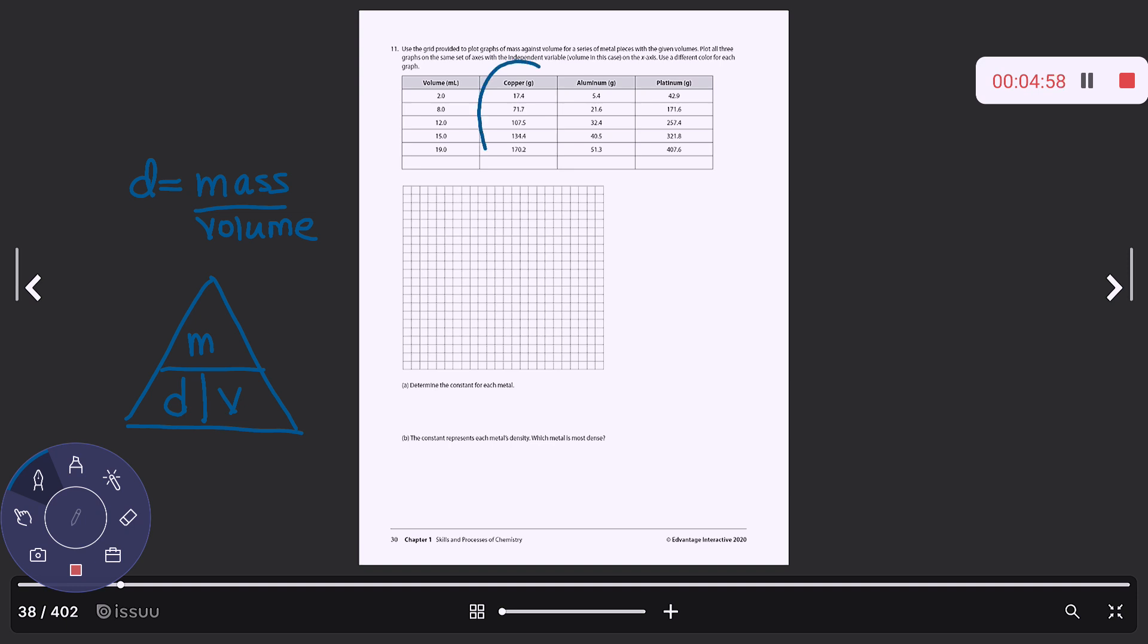So here, let's look at copper here. We have copper with the corresponding volumes. And then we've got actually one, two, three, four, five different samples of copper. So we obtained the mass, we got the corresponding volumes.